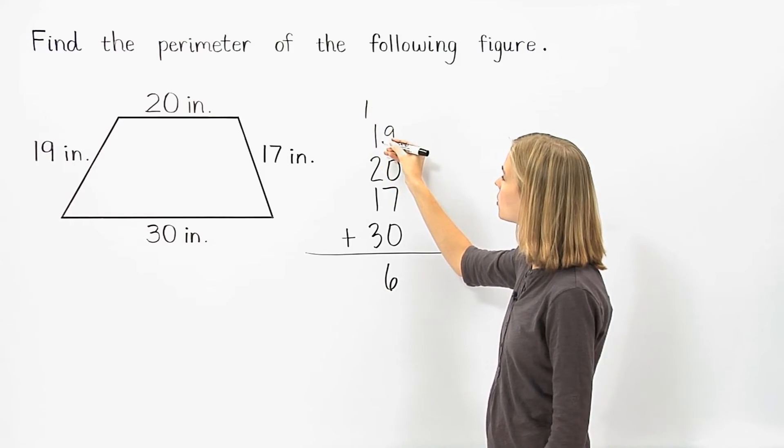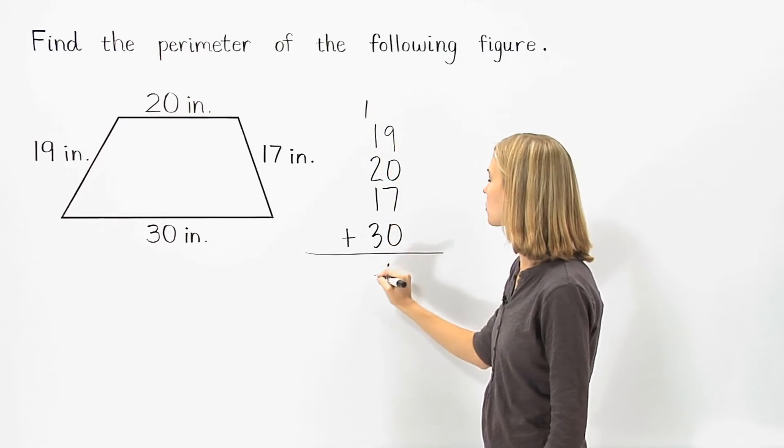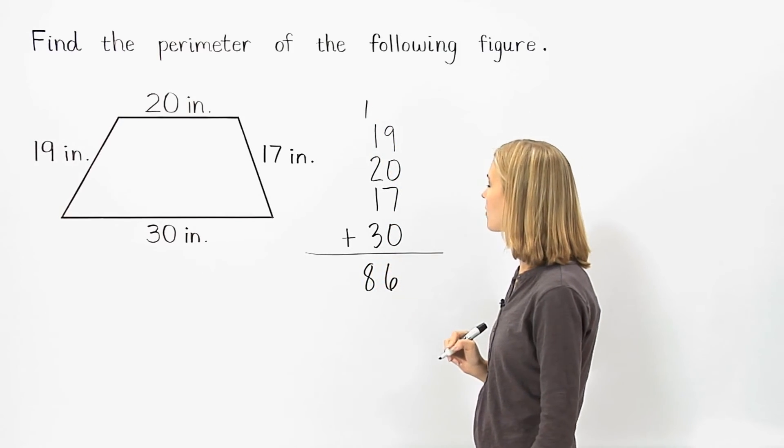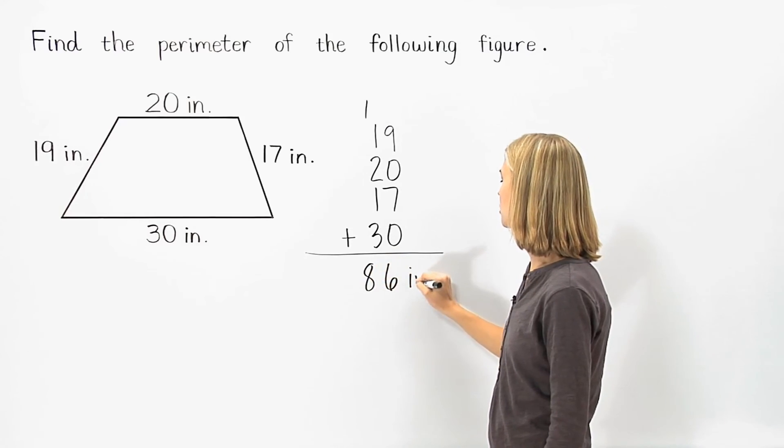1 plus 1 is 2, 2 plus 2 is 4, 4 plus 1 is 5, and 5 plus 3 is 8. So we have 86. So the perimeter of the figure shown is 86 inches.